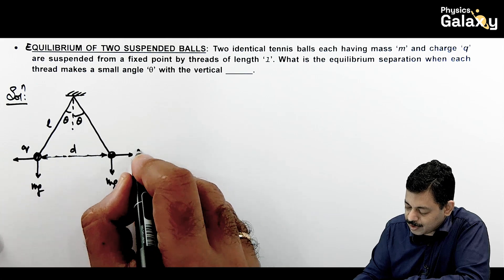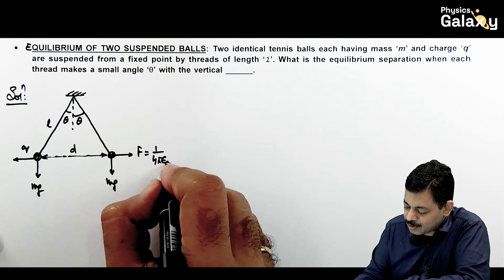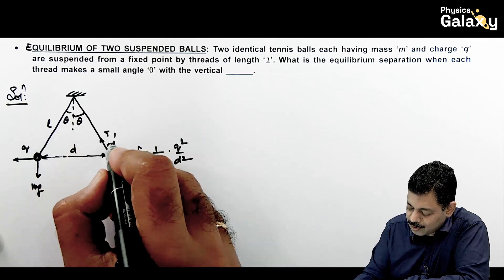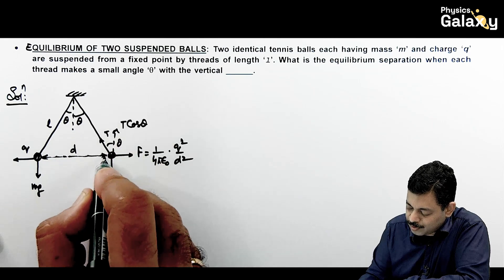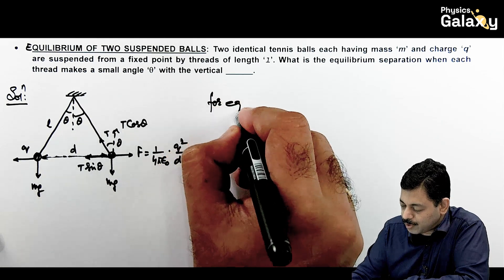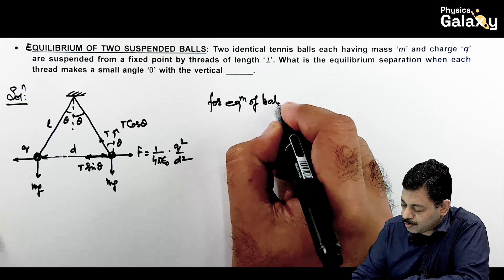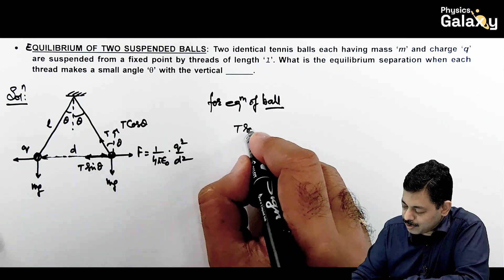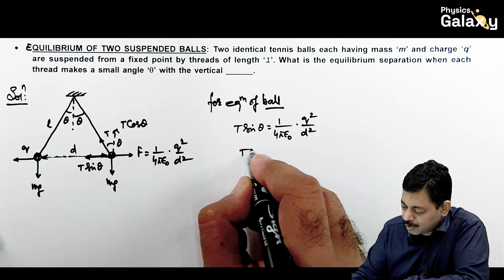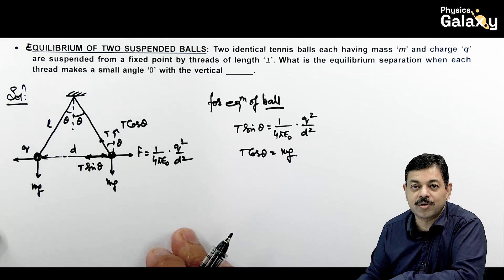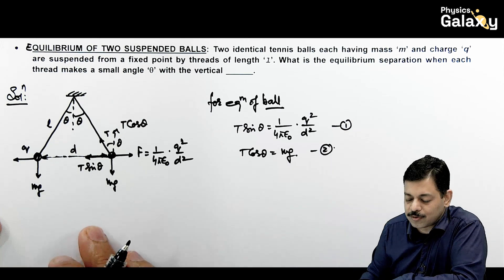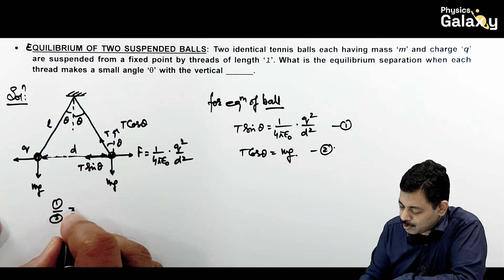And the balls are having charge Q and mass M, so they will be experiencing downward force Mg. And on both of them, electric repulsion will act. Force can be written as 1 by 4 pi epsilon naught into Q square by D square. Tension in string will be T. For equilibrium, if this angle is theta, we can write this force as T cos theta and this force as T sin theta. Now in this situation, for equilibrium of the ball, we can write here T sin theta equals 1 by 4 pi epsilon naught Q square by D square, and we can write T cos theta equals Mg.